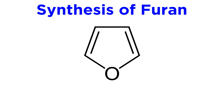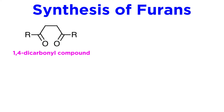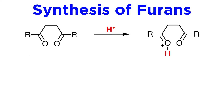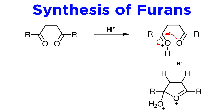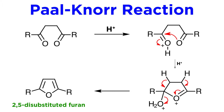To quickly cover how furans are formed, it is possible to isolate furan from cellulose via a complex catalytic process, but more interesting is the synthesis of substituted furans from 1,4-dicarbonyl compounds. This occurs via acid-catalyzed dehydrative cyclization. One carbonyl is protonated, which prompts attack from the other carbonyl oxygen. After further protonation, elimination of one proton kicks off water, and elimination of another proton neutralizes the oxygen atom, leaving us with a disubstituted furan. This process is known as the Paal-Knorr reaction.